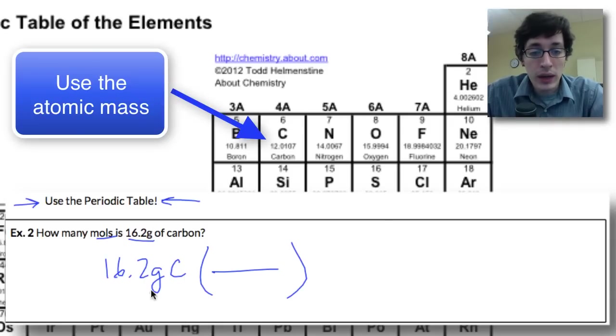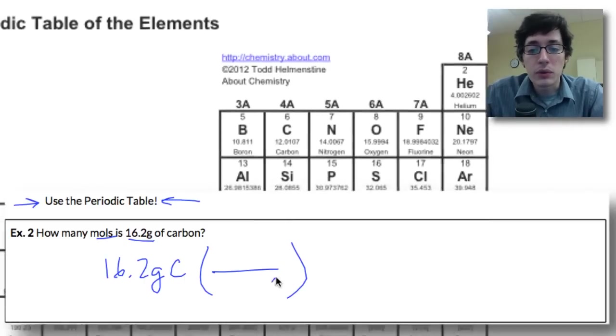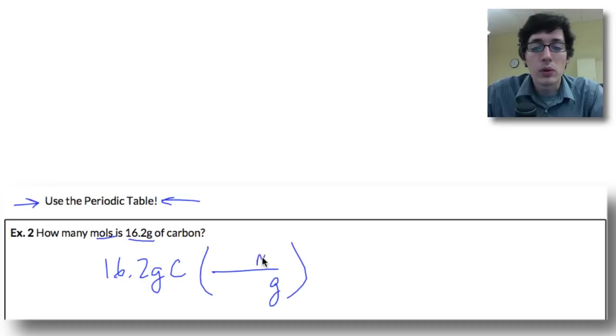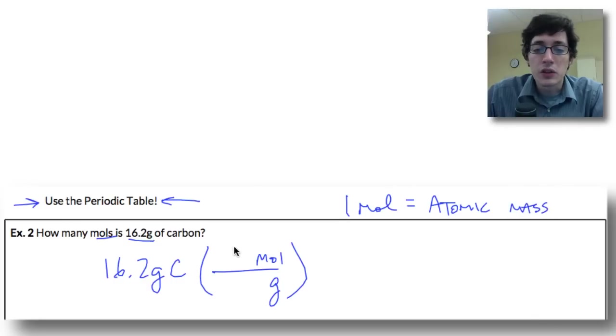Now we are changing grams, we want to get rid of grams, so we need to put grams on the bottom and we're going to put moles on top. And remember, one mole of a substance is equal to the atomic mass. We just said that a minute ago. So one mole of carbon is equal to 12 grams, and we can do the conversion. Grams cancel out.